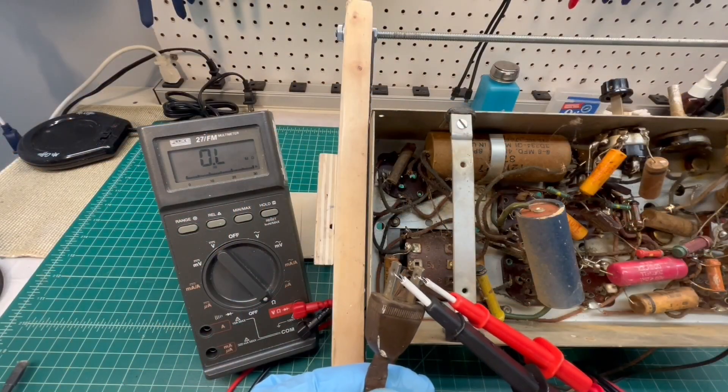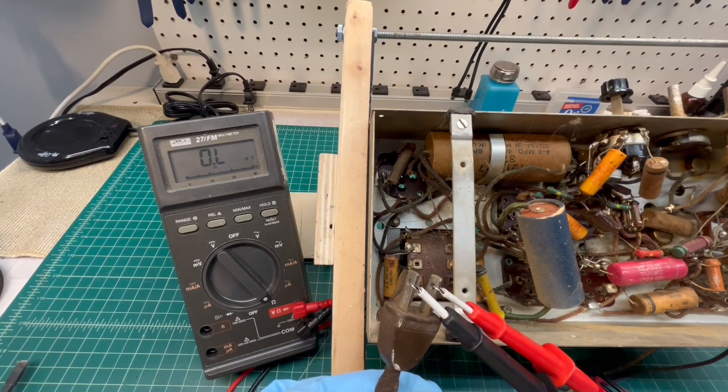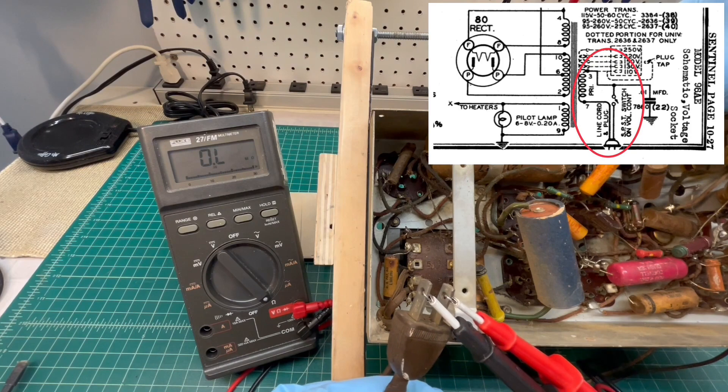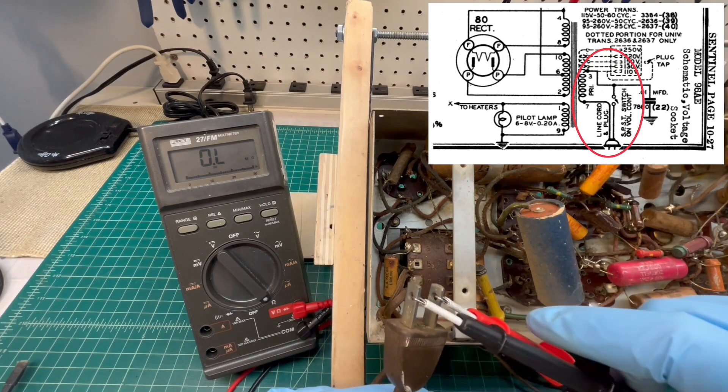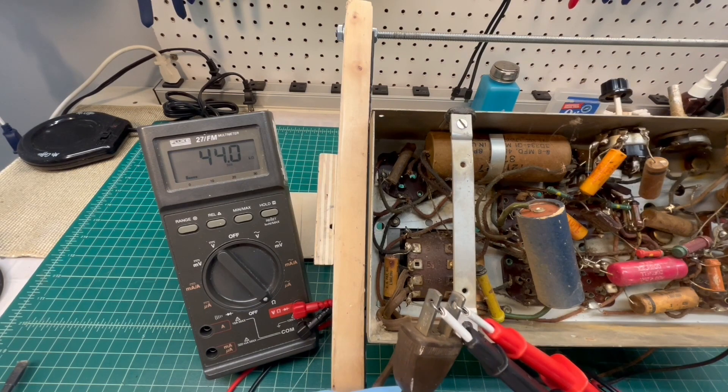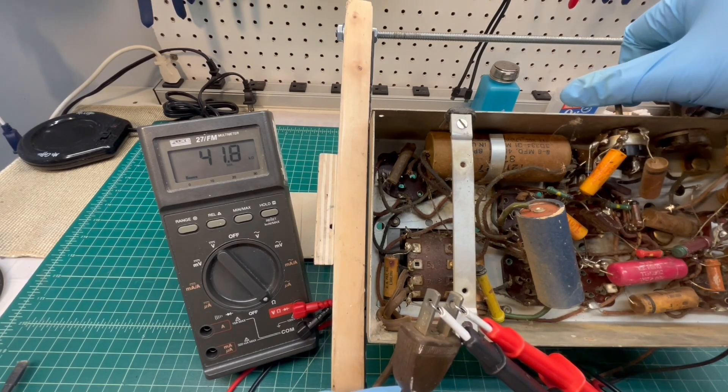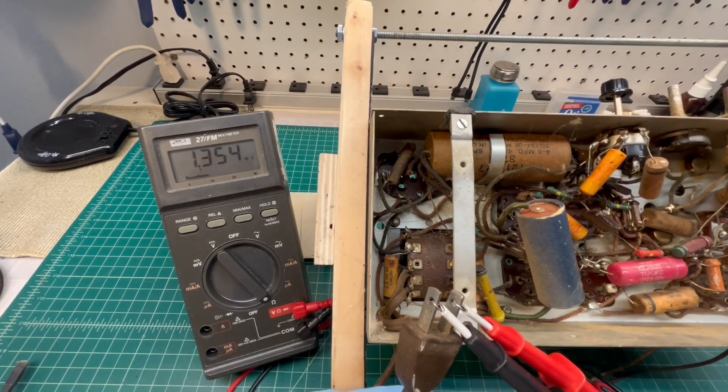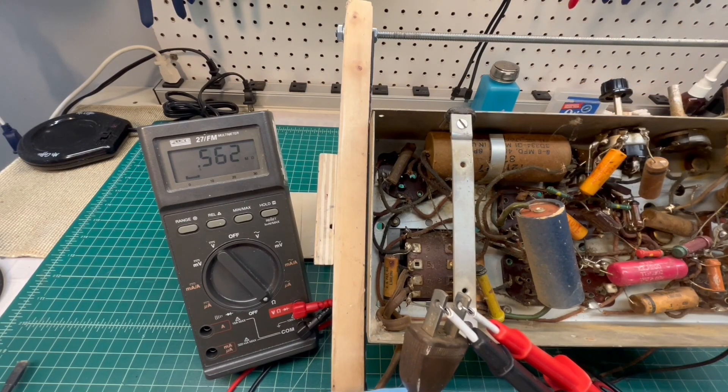Let's measure the DC resistance of the power transformer that goes through the on-off switch back to the power plug. You can see we've got some very high DC resistance - 41k and now over 1 meg.